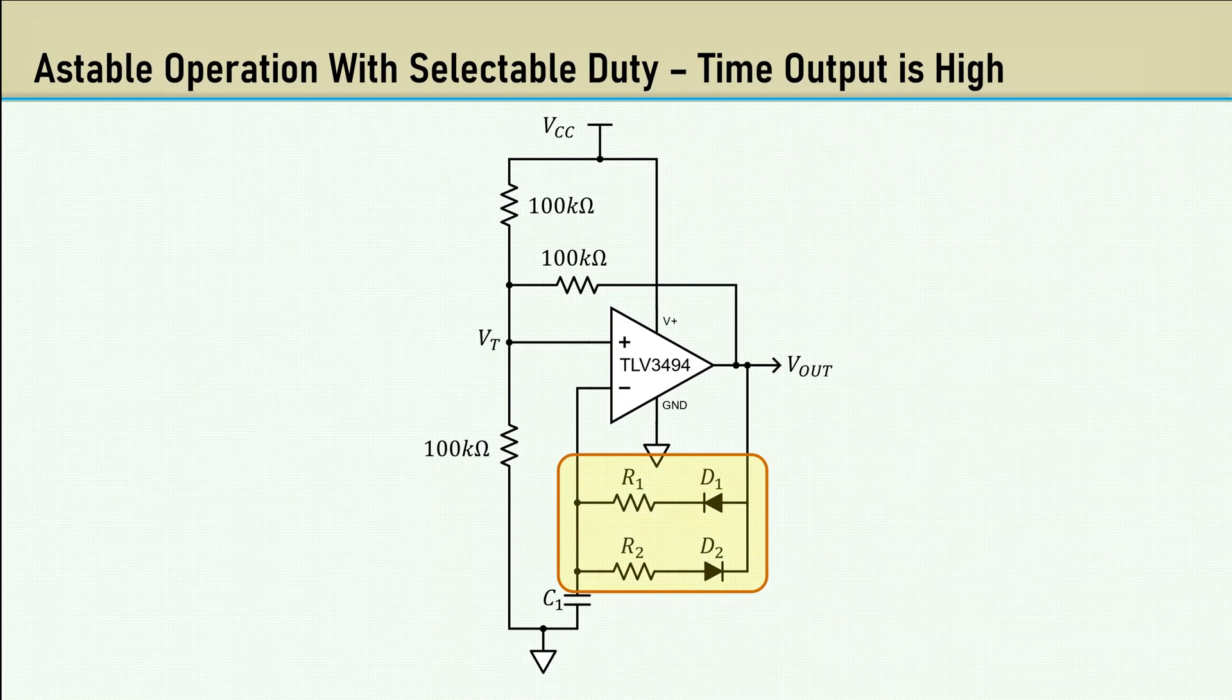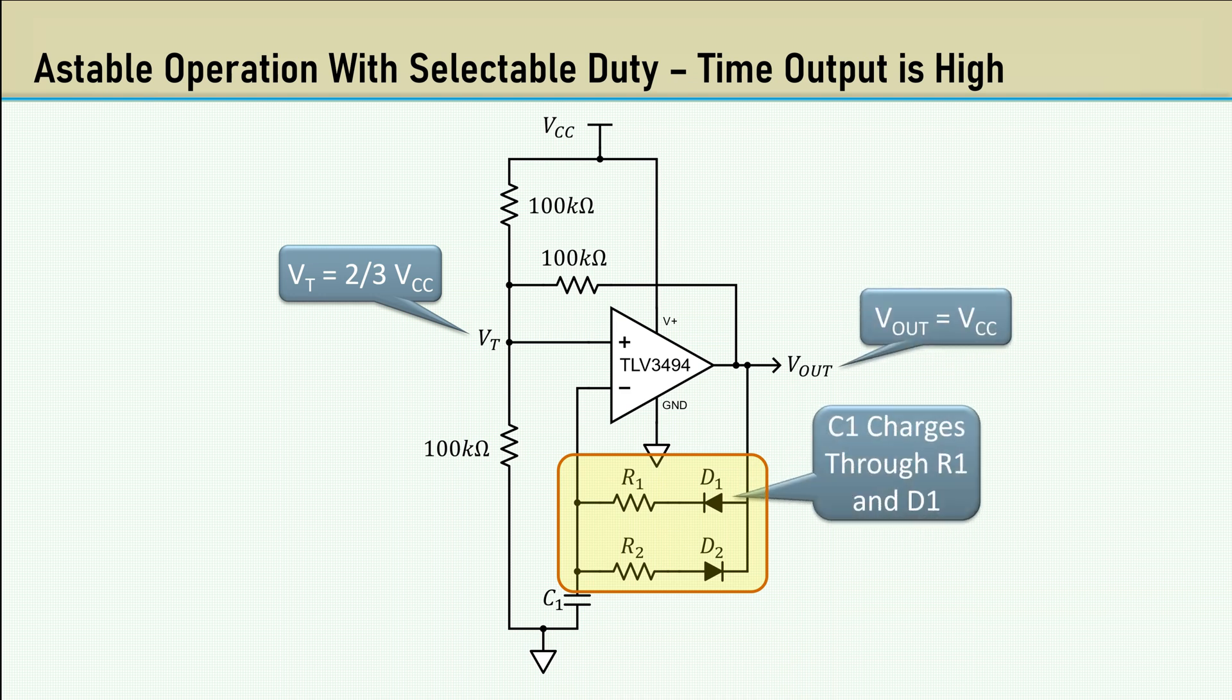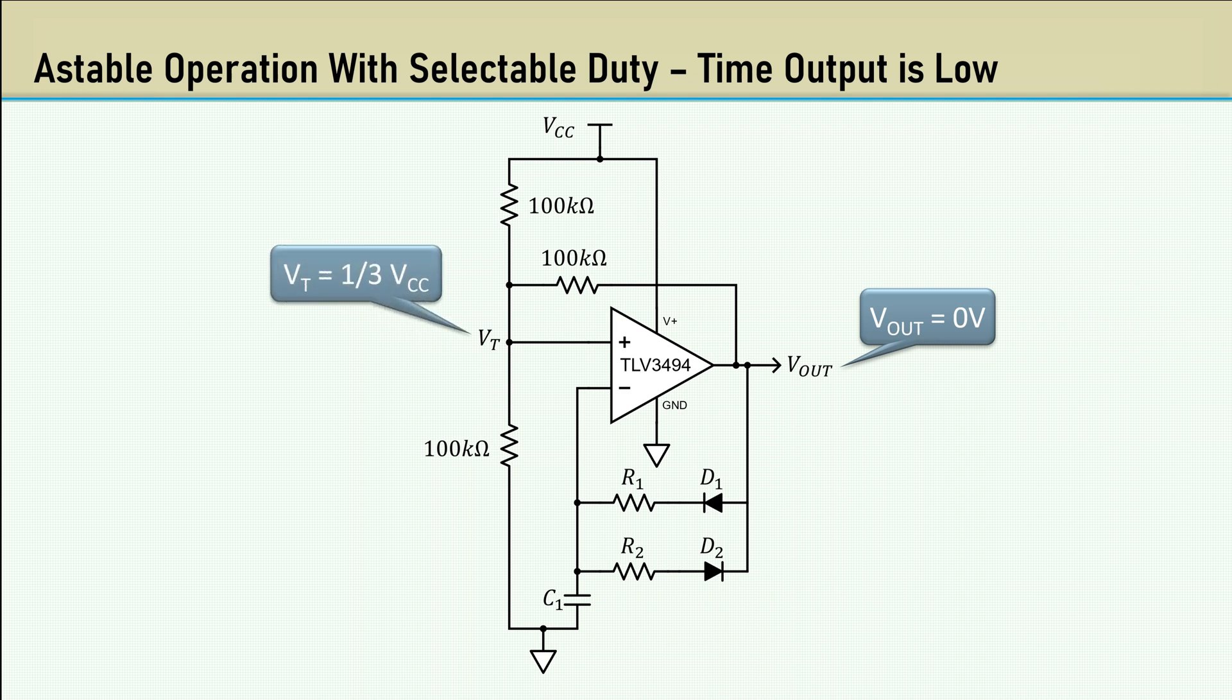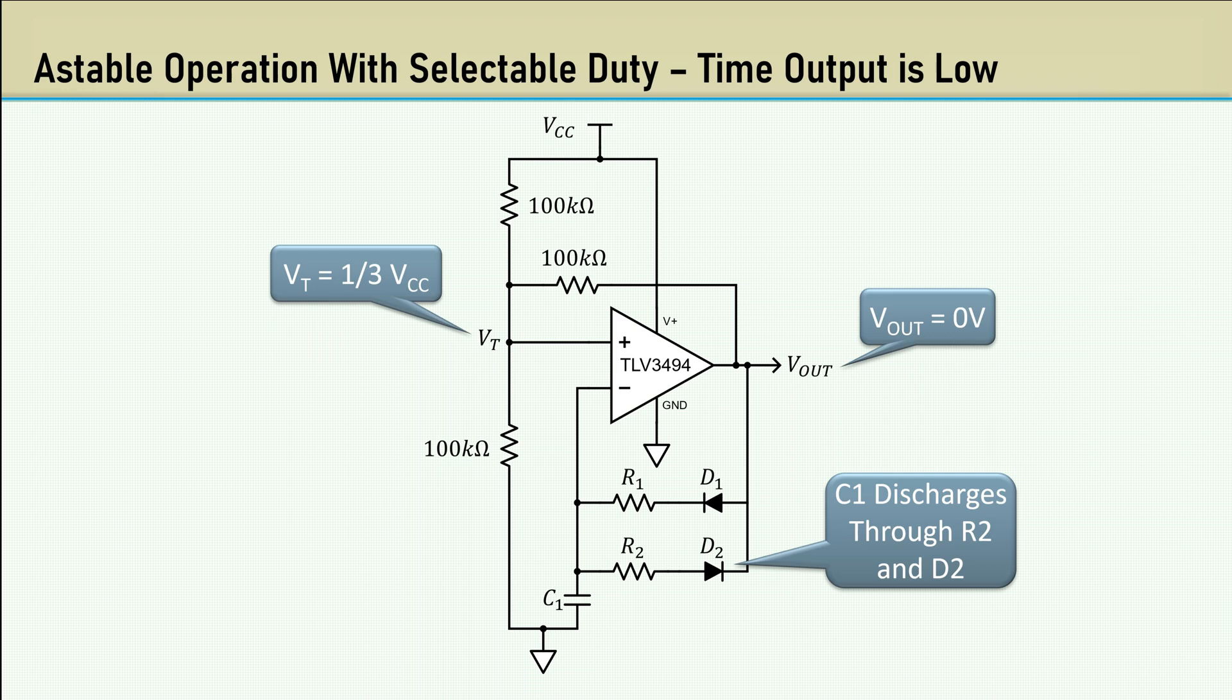The only difference between the previous astable and this example is the addition of diodes in series with the resistors that are charging and discharging the capacitor. In this case, let's say the threshold voltage is two-thirds VCC because Vout equals VCC. C1 charges through R1 and D1. The time constant of R1 and C1 determines the amount of time the output is high.